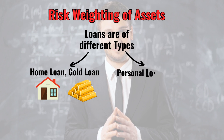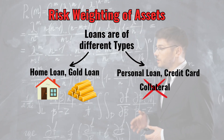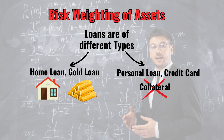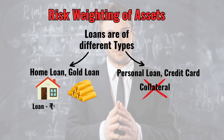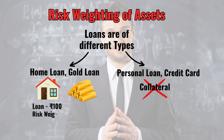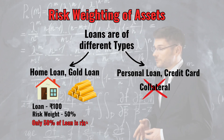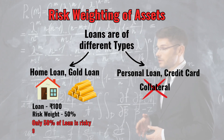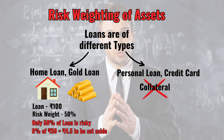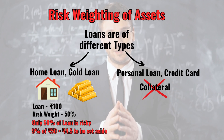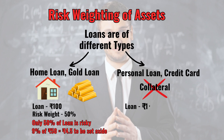On the other hand, a personal loan doesn't have any collateral — it's unsecured. This means it's riskier than other types of loans. So the regulators say: for Rs.100 worth of home loans, we will assign a risk-weight of 50%. That means we consider only Rs.50 worth of the loan to be risky. So you only need to set aside Rs.4.5 worth of your own capital, which is 9% of Rs.50.